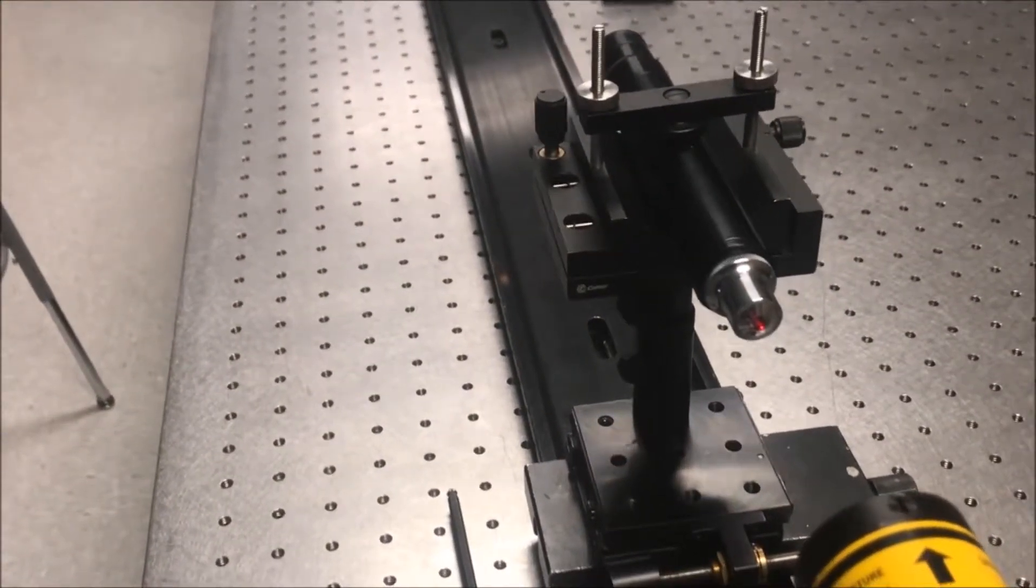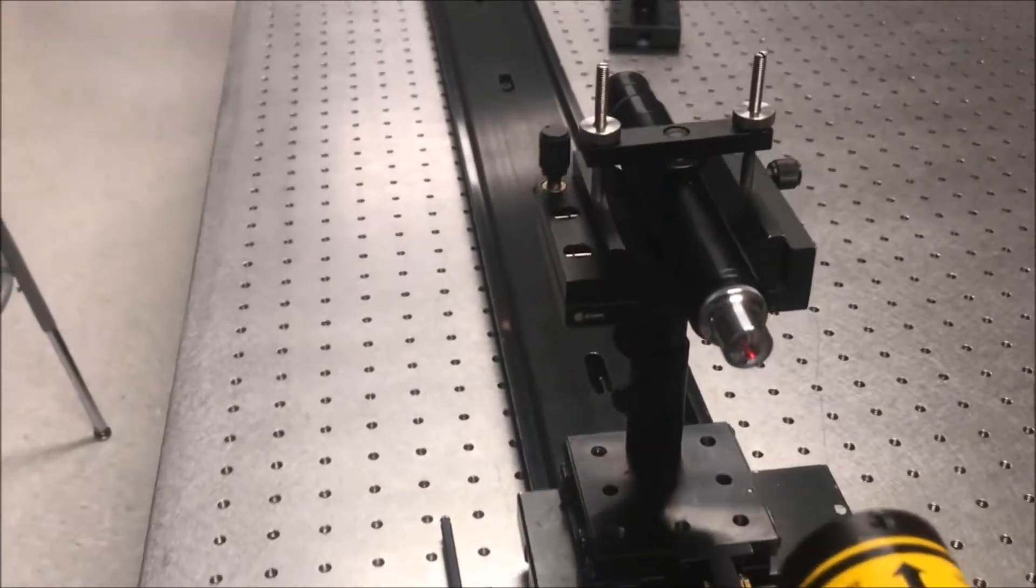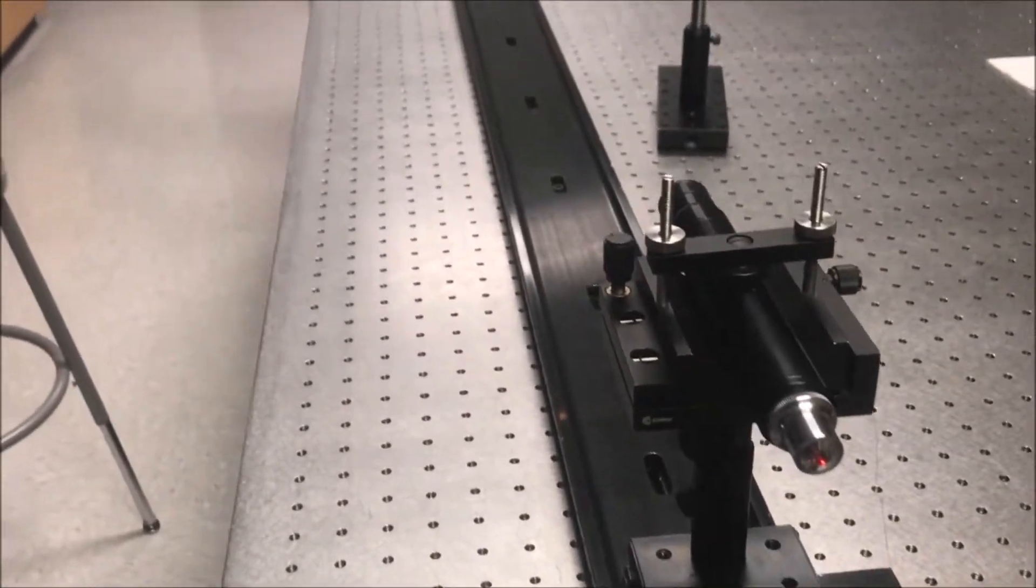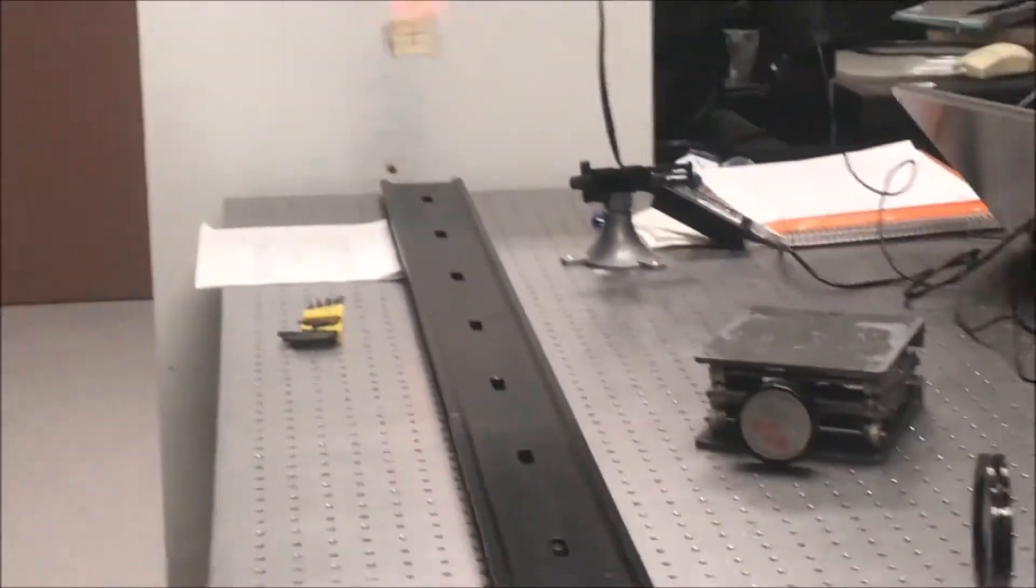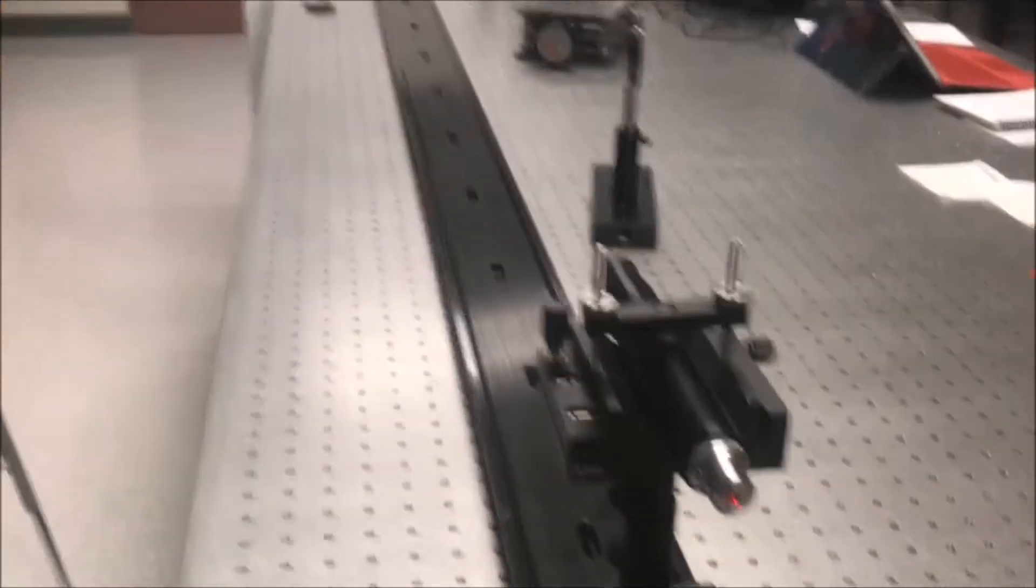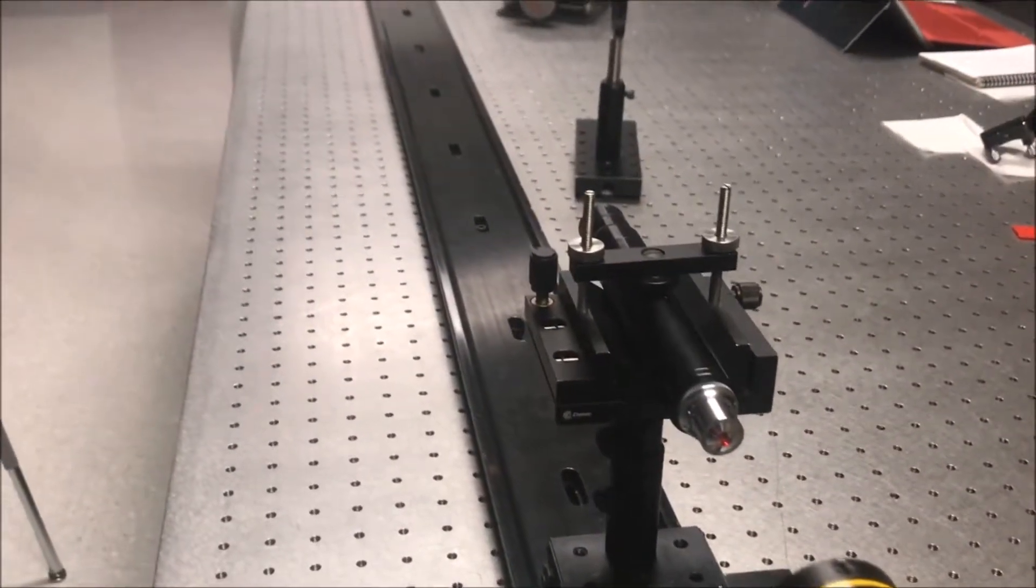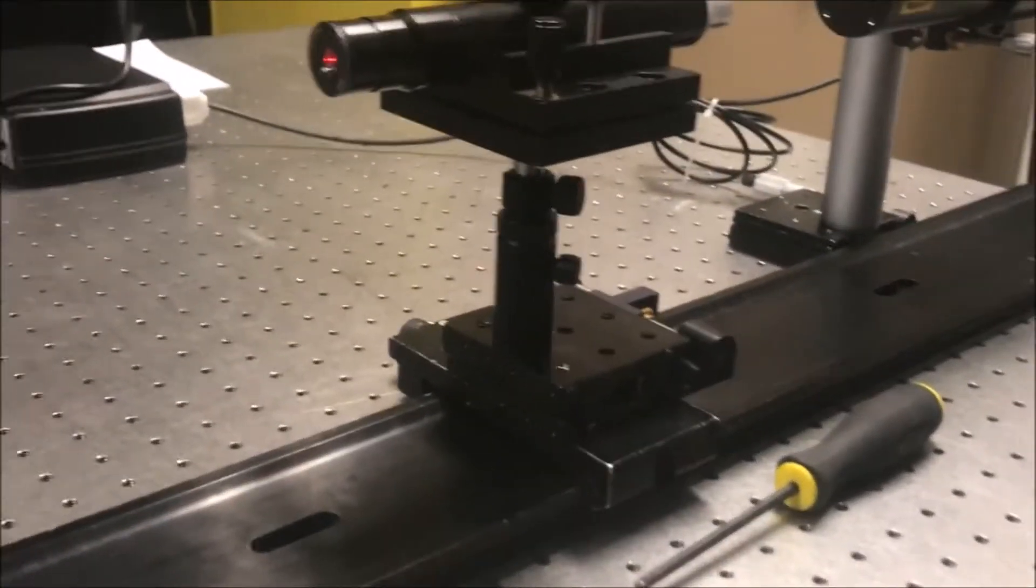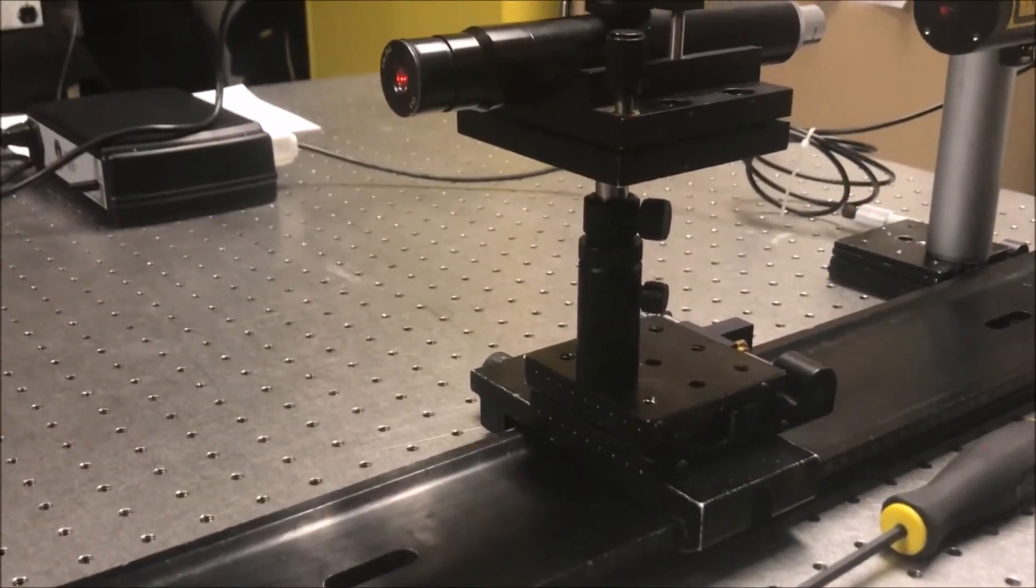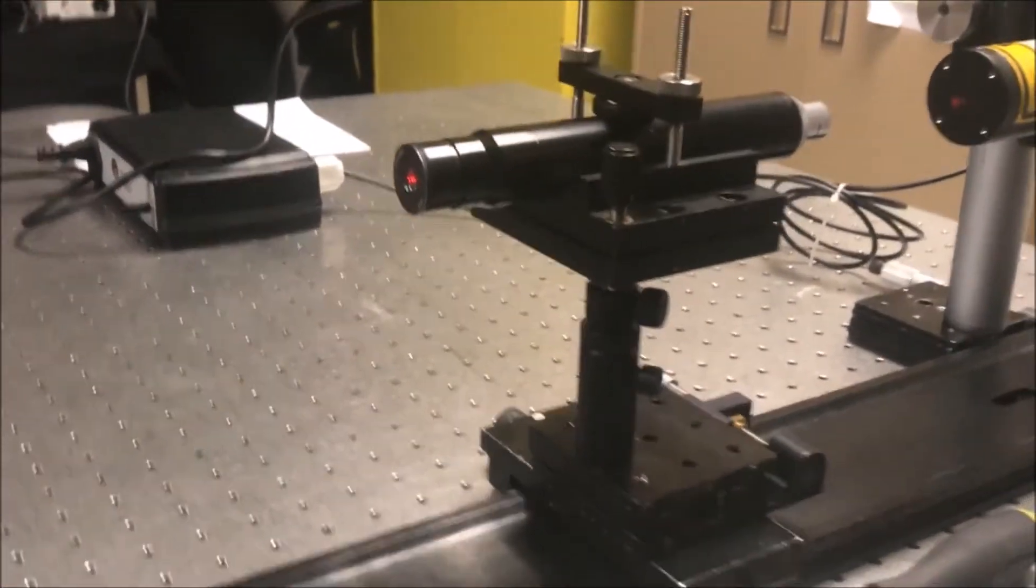In the final portion of the lab, we constructed a microscope with a reticle at the intermediate image plane. The goal of this portion was to align the image of the reticle with the target on the screen opposite the laser. The laser beam path was aligned through pitch and yaw adjustments, and the reticle image was positioned using x and y translation. We could not achieve the proper vertical alignment before lab ended due to the translation stage placed under the post holder the microscope was mounted on.